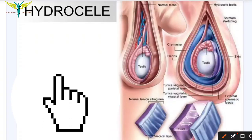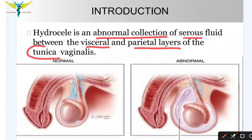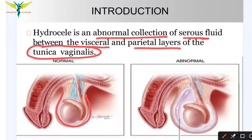In this video, let's learn about hydrocele. Hydrocele is an abnormal collection of serous fluid between the visceral and the parietal layers of the tunica vaginalis. In the scrotum there is a layer called tunica vaginalis, and there is an abnormal collection of serous fluid between both layers of the tunica vaginalis.